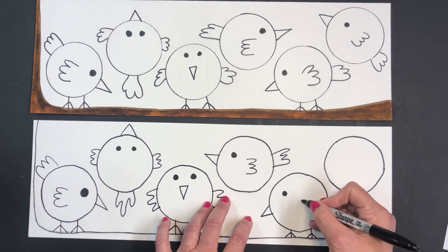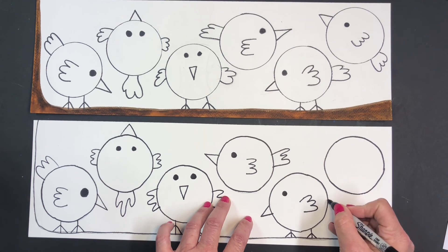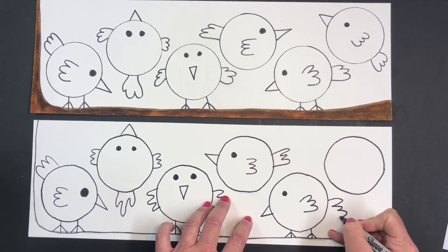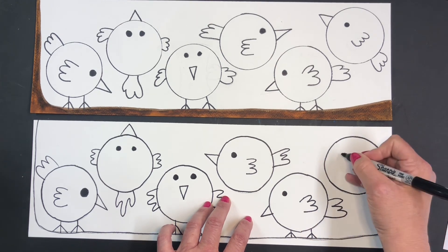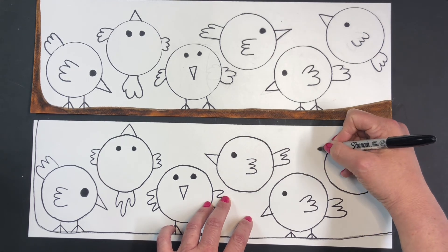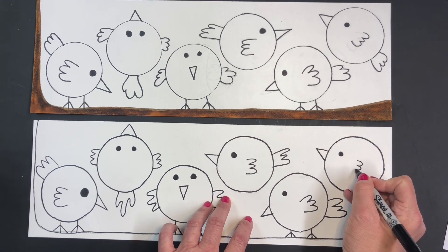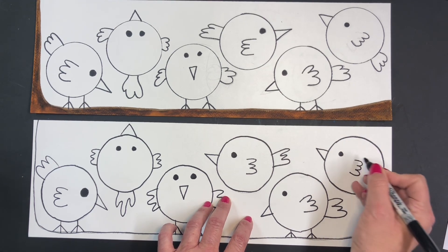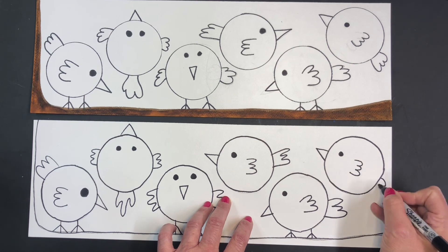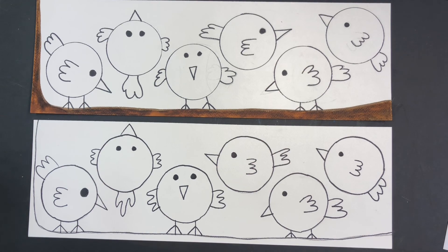And after you do it in pencil, you're going to trace everything in Sharpie. Make sure your nose is under the eye. And when you're done with this step, I will show you about the coloring.